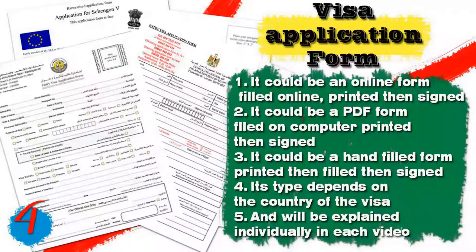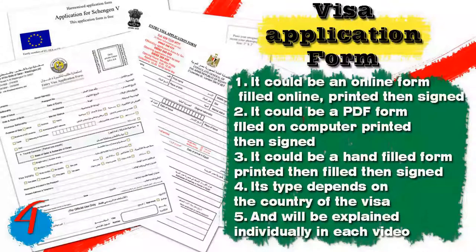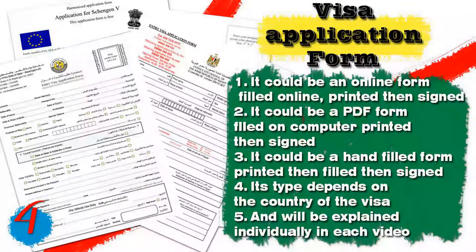Document four is the visa application form. It can be an online form filled and then printed and signed, a PDF form filled on a computer then printed and signed, or a hand-filled form that is then signed. The type depends on the country of the visa and will be explained individually in each video.